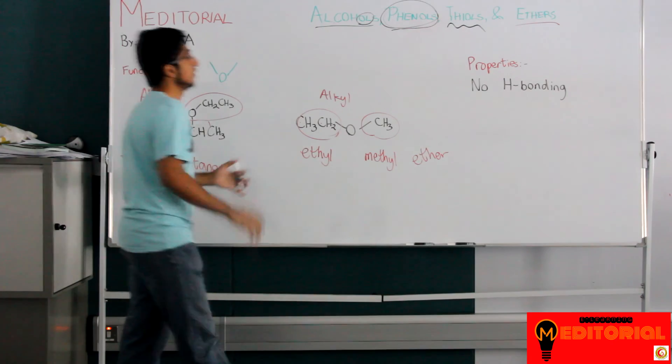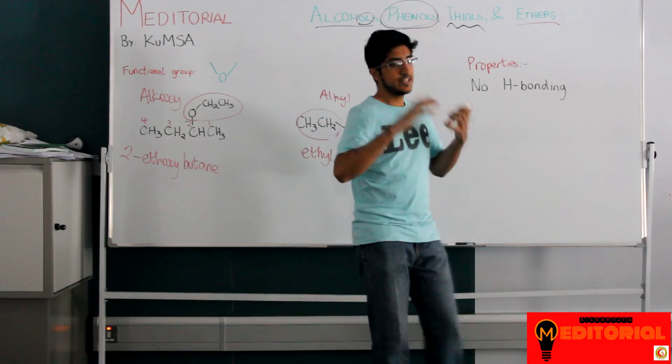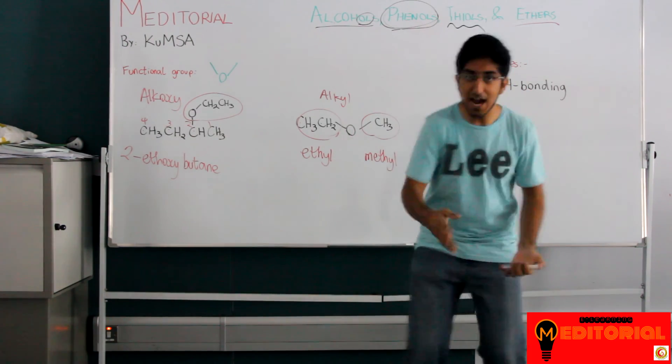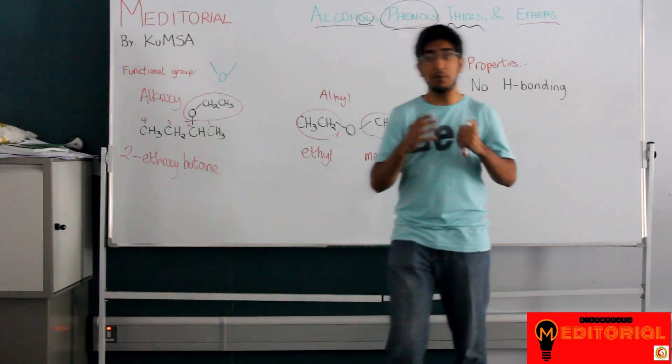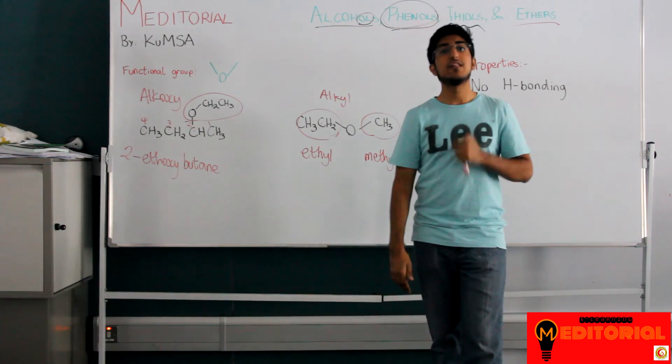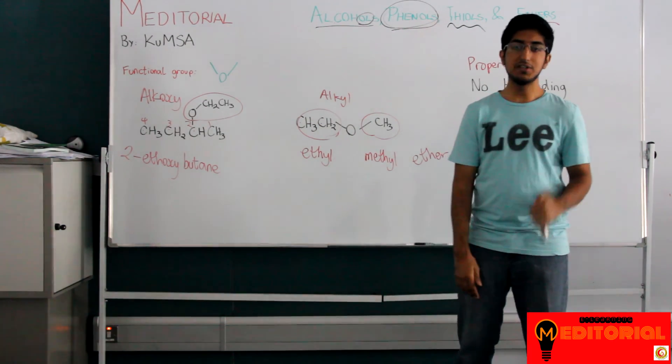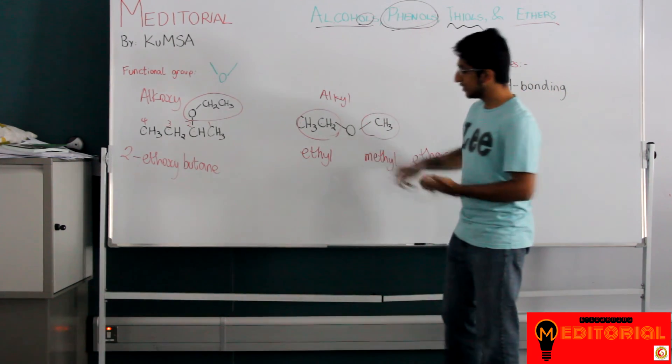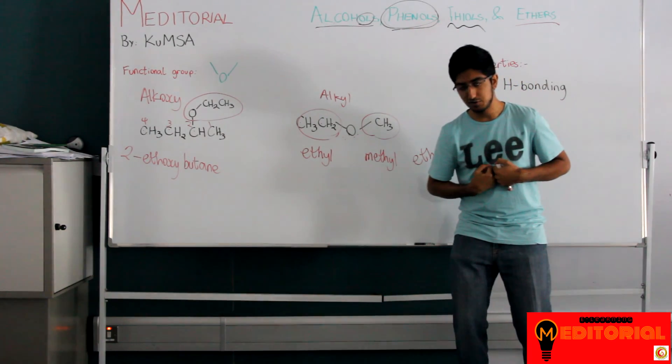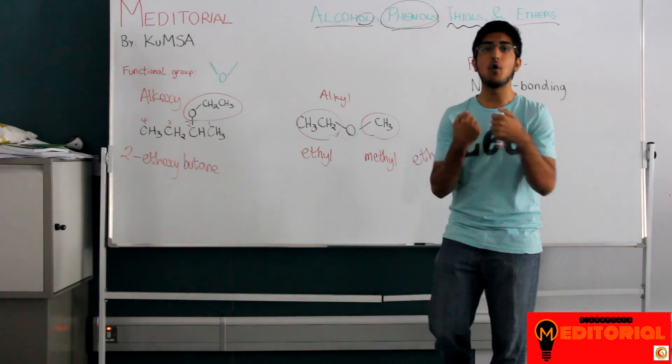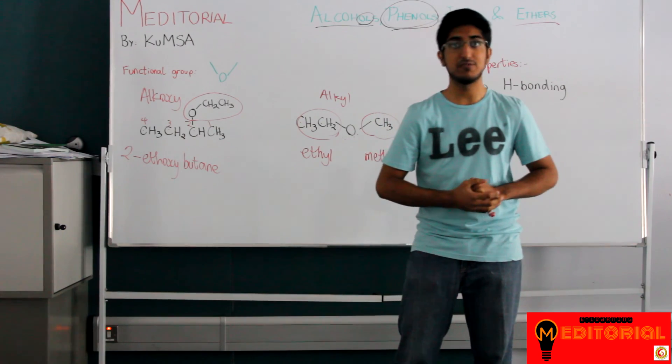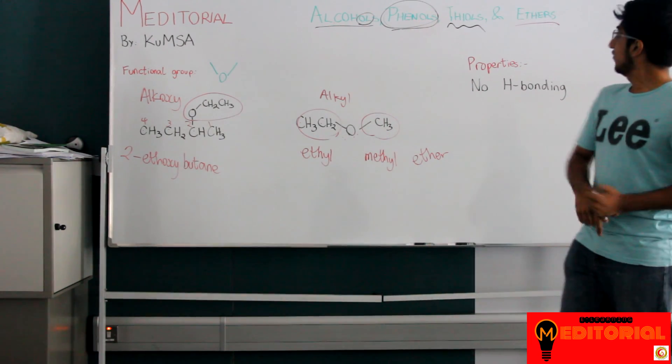Now the properties of ethers. Ethers cannot do hydrogen bonding because they don't have a hydrogen with the oxygen. I don't care how much you look for it. You cannot find that hydrogen attached to the oxygen. However, they can accept hydrogen bonds because they do have an electronegative O which has two free pairs of electrons that can accept hydrogen bonds, but they cannot give, they cannot form any hydrogen bonds. I guarantee you no matter how hard you look, you will not find any hydrogen bonds being formed. And that's it for ethers.